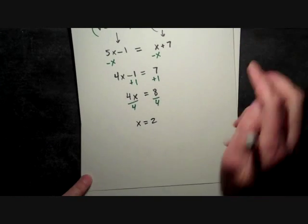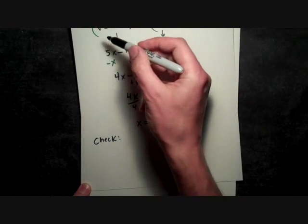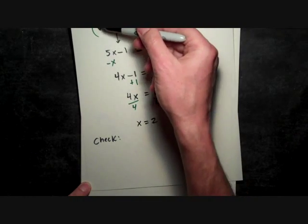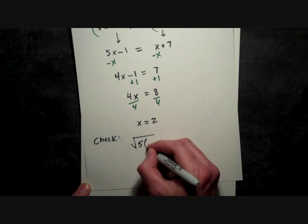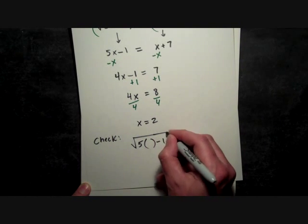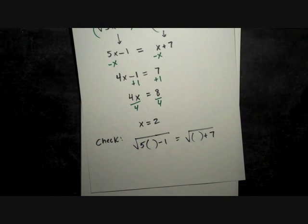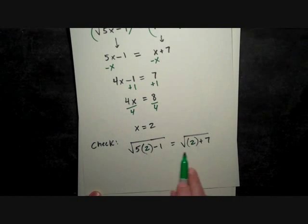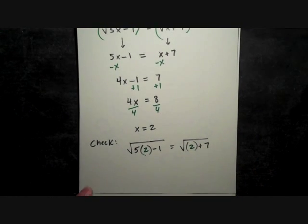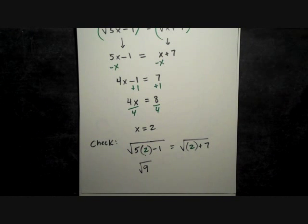Remember the last step: always check the answer. If I plug x = 2 into the original equation before I squared both sides, there were two places that I had an x, and I'm going to put a 2 in for both of those. And we can see in this case, we have 10 - 1 is 9, square root of 9 on the left.